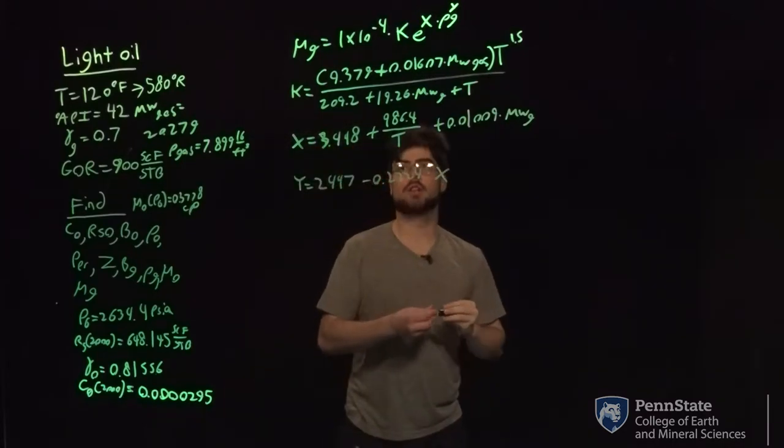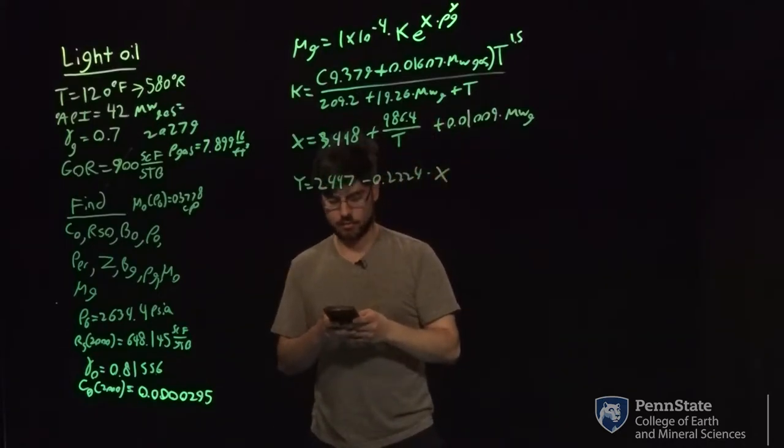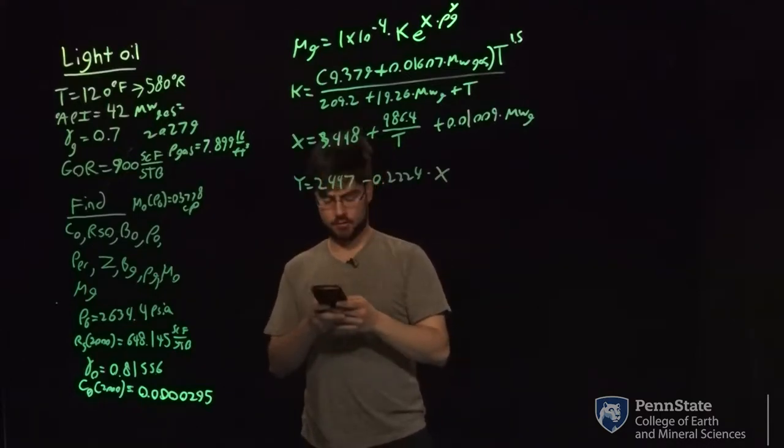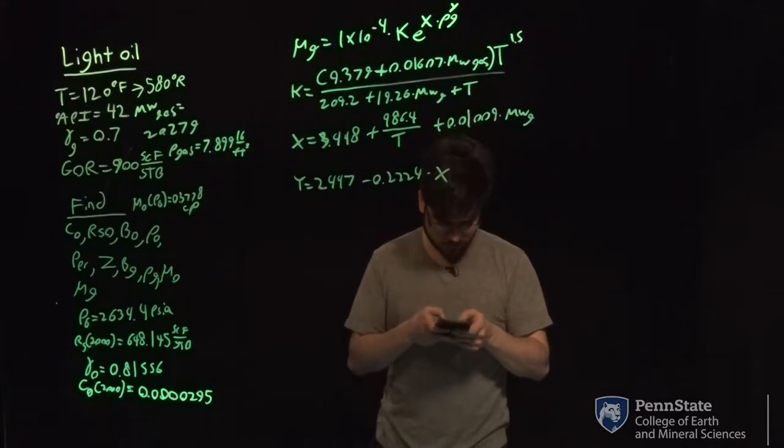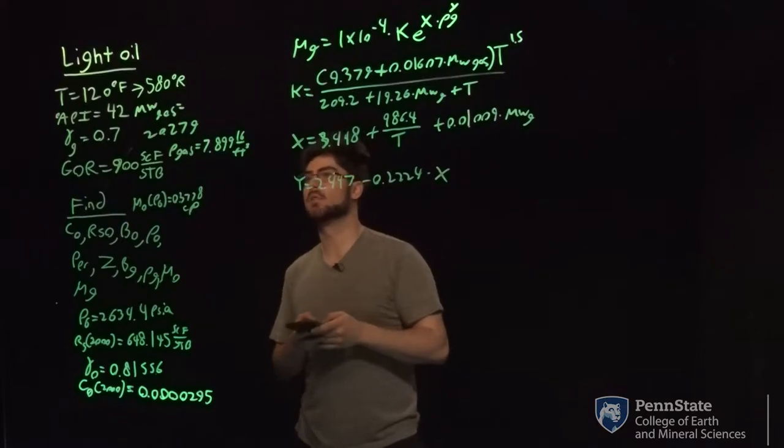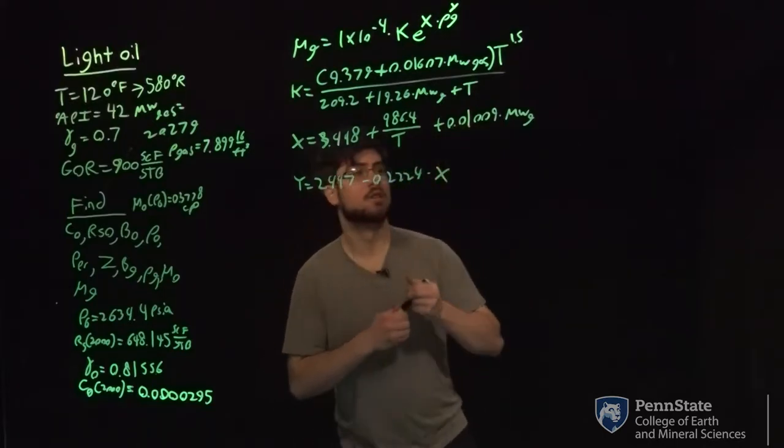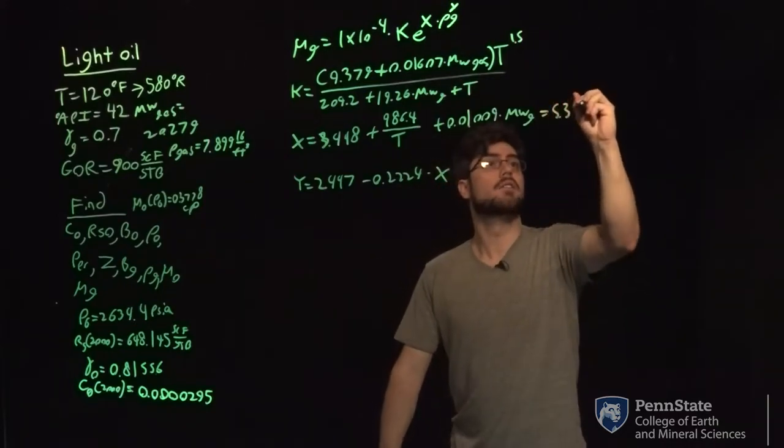So the first thing we can solve, we can either solve for k or x first. I'll solve for x first. That's going to be 3.448 plus 986.4 divided by your temperature in Rankine, which will be 580 plus 0.01009 times the molecular weight of gas, which we solved earlier, which is 20.279. And that's pound per pound mole. So this equals 5.353.